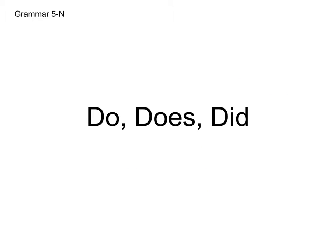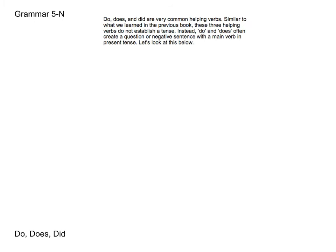So let's jump right into do, does, did. As you saw in the previous booklet, we will be covering a number of different types of helping verbs. Do, does, and did are very common helping verbs, just like may, might, and must. With do, does, did, we often can create a question or a negative sentence with the main verb in the present tense, which can be hard to do when you have a present tense verb. So let's look at an example.